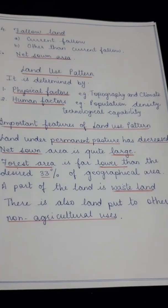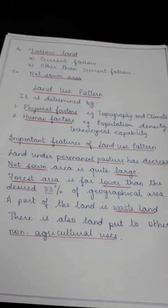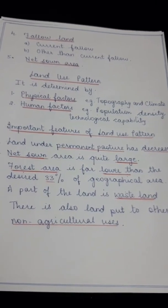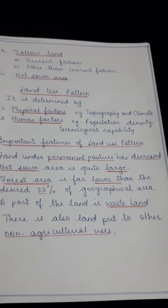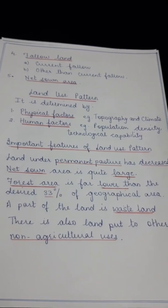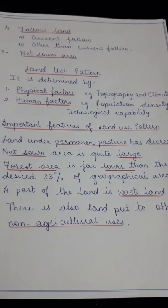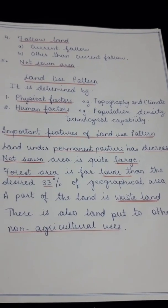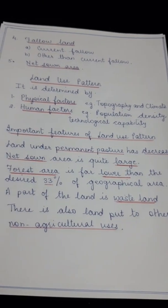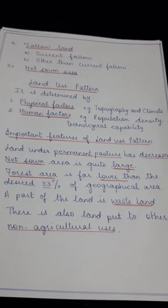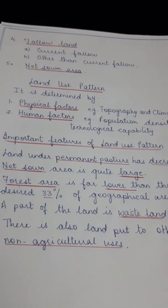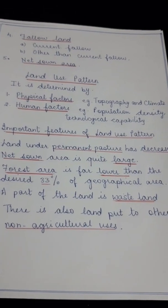However, it should be noted that net sown area varies greatly across states. In Punjab and Haryana, it is more than 80%, whereas in states like Arunachal Pradesh, Mizoram, and Nagaland it is less than 10%. This is due to relief and climatic conditions — Punjab and Haryana are plain areas with fertile soil, while Arunachal Pradesh, Mizoram, and Nagaland are mountainous hilly areas with dense forest.